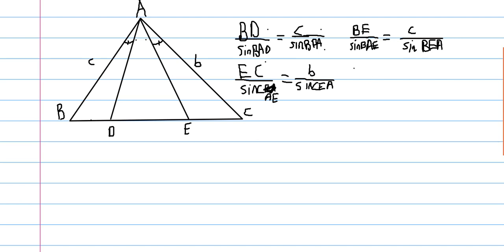And then last is DC. DC over sine CAD is equal to b over sine CDA.